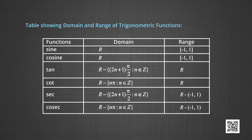A table shows the domain and range of trigonometric functions. For the sin function, the domain is all real numbers and the range is the closed interval minus 1 to 1. For the cosine function, the domain is all real numbers and the range is the closed interval minus 1 to 1. For the tan function, the domain is all real numbers except the odd multiples of π/2 and the range is all real numbers. For the cot function, the domain is all real numbers except integral multiples of π and the range is all real numbers.